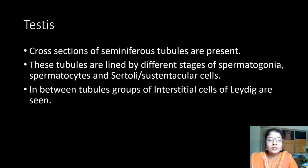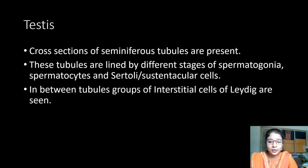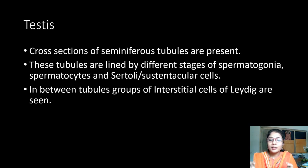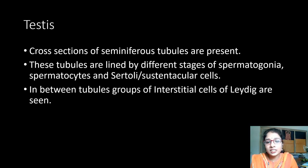Identification points for testis: cross sections of seminiferous tubules are present, consisting of various stages of spermatogonia — type A, type B spermatogonia, primary spermatocytes, secondary spermatocytes — interspersed with Sertoli cells or sustentacular cells. In between the seminiferous tubules there are collections of interstitial cells of Leydig, which produce testosterone hormones in males.